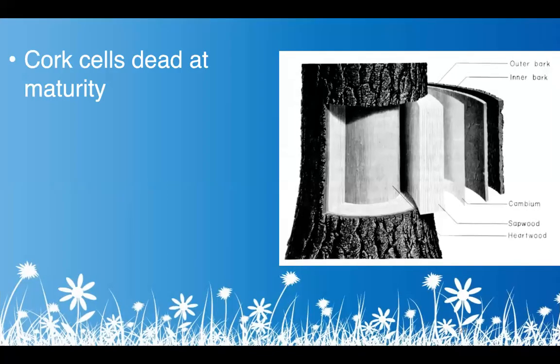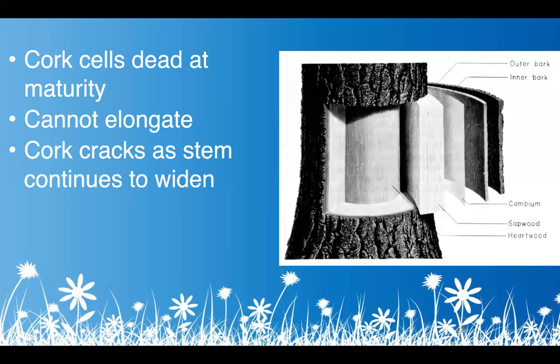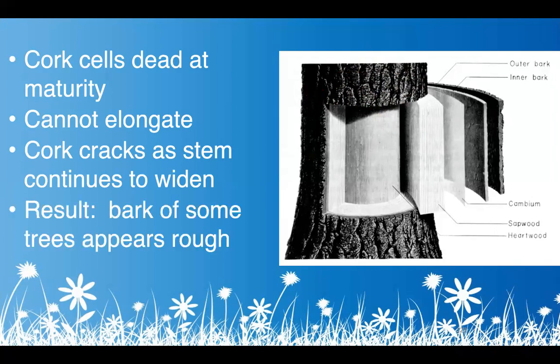Cork cells are dead at maturity, so they cannot elongate. As the tree continues to widen, the cork will crack as the stem expands — that's why bark has this rough appearance on the outside.